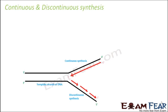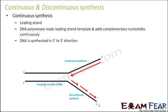Once the replication fork structure is formed, DNA polymerase can do its job. The job of DNA polymerase is to create a copy of both separated strands. There are two types of synthesis: on one strand there is continuous synthesis, and on the other strand there is discontinuous synthesis.